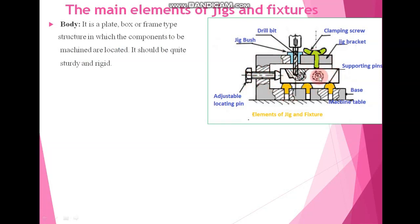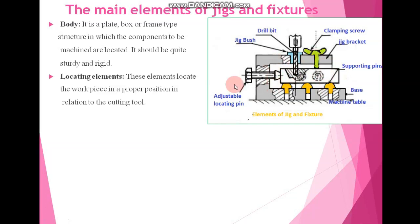The workpiece is mounted inside the body. We have locating elements. These elements locate the workpiece in proper positioning in relation with the cutting tool. Here we have the locating element — these are the locating pins. With the help of these locating pins or locating elements, we can locate the proper positioning of the workpiece for doing any operation in the jig and fixture body.